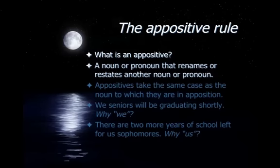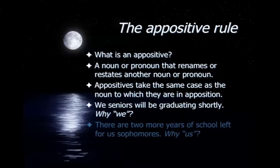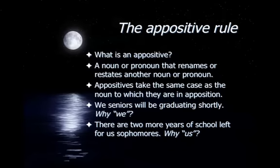This is our first special rule — the appositive rule. An appositive is a noun or pronoun that renames or restates another noun or pronoun, and it can appear anywhere in the sentence. If you have an appositive paired with a pronoun, the case of the appositive is going to match the noun it's in apposition to. Figure out what the noun is doing in the sentence, then make sure the case of the pronoun matches it.